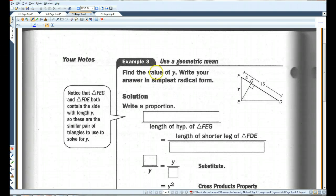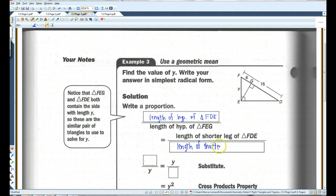Find the value of Y. Write your answer in simplest radical form. They're not looking for a decimal answer here. They want an exact answer. First thing, write a proportion. You know you have three similar triangles here. The length of hypotenuse triangle FEG corresponds with the length of the hypotenuse of triangle FDE. That's the whole triangle. This equals the length of the shorter leg of triangle FDE. The shorter leg would be here.